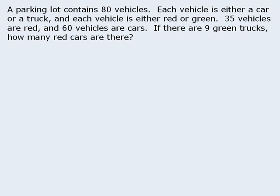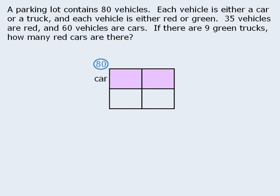Here's how the method works. We're going to take each of the 80 vehicles and place them into one of the four boxes shown here. Now one of our two features is vehicle type. So in the two boxes in the top row we'll place cars, and in the two boxes in the bottom row we'll place trucks. The other feature is color. So in the two boxes in the left-hand column we'll place red vehicles, and in the two boxes in the right-hand column we'll place green vehicles.